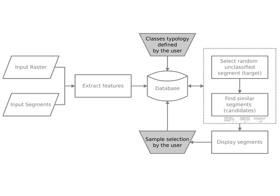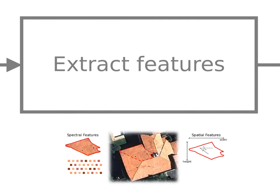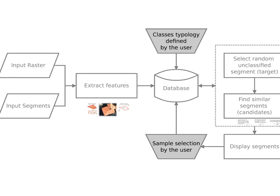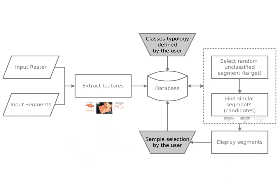We have input data composed by images and segments. We make feature extraction from the images. Suppose we have an image with a highlighted polygon in red — we can obtain spectral features which get all the pixels inside this region and make several computations: the average, the maximum, the mean, the amplitude, and so on. We can also get the geometric properties of the same polygon. All of this data will try to characterize this segment. Then we feed the database with all these features and go to the process of sample selection.